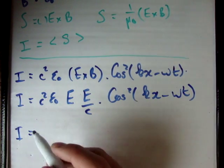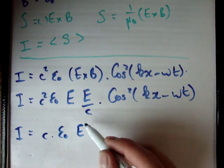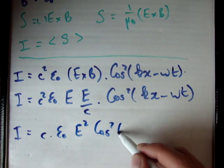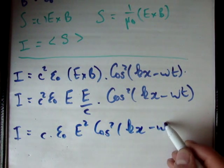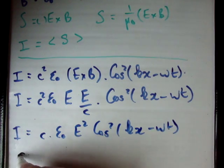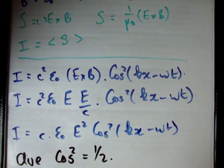Now the irradiance is going to be equal to C times epsilon zero times the magnitude of the electric field squared times cos squared kx minus omega t. Now the important thing to note here is that the average of cos squared is equal to a half. If you want to know why that is, ask a mathematician.